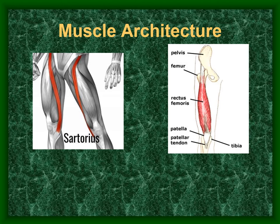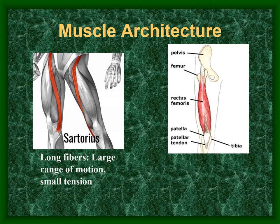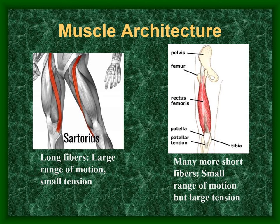The sartorius is the longest muscle in the body — its fibers are very long and provide tension over a large range of motion, but cannot generate much tension due to fewer fibers. The rectus femoris, by contrast, has many short fibers — a small range of motion but considerably more tension.